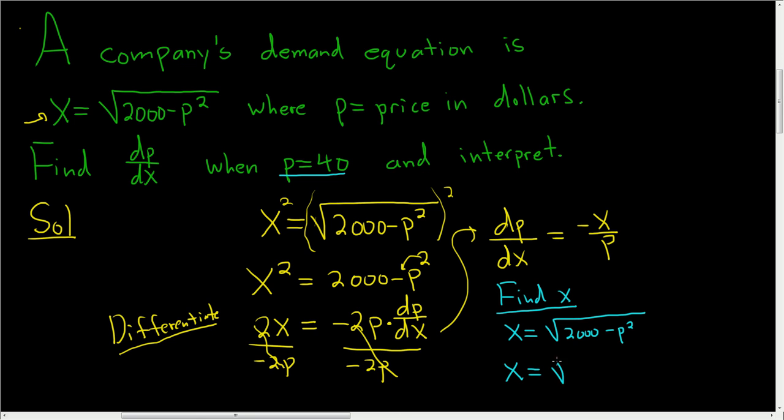So x is equal to the square root of 2000 minus 40 squared. 40 squared is 1600. So x is equal to the square root of 400, which is 20.